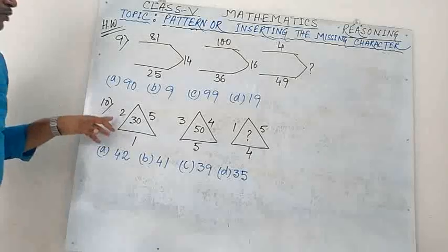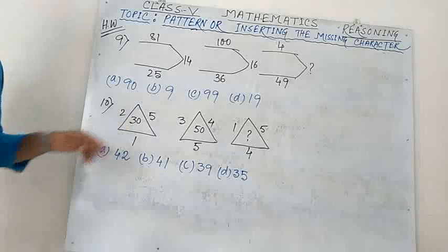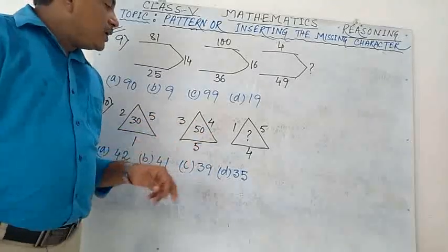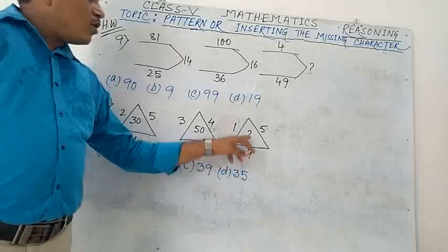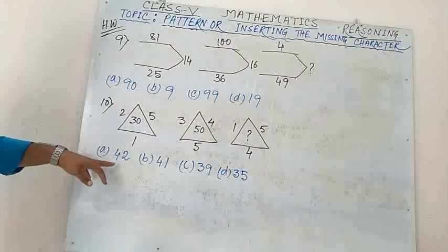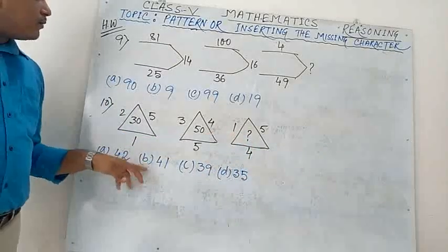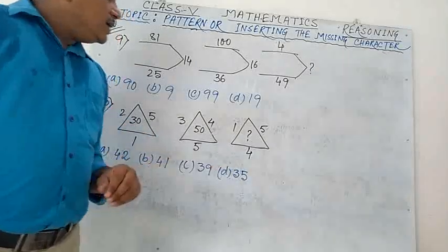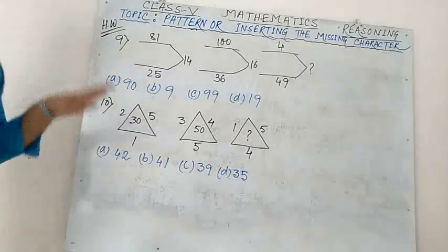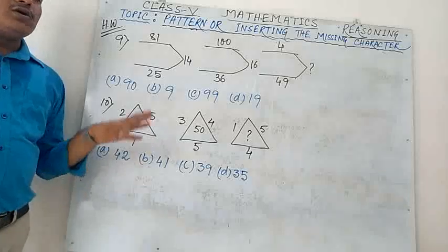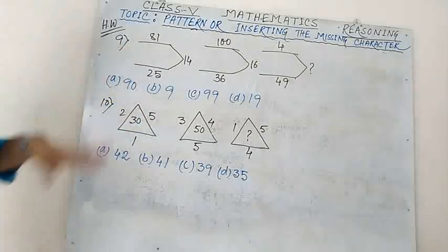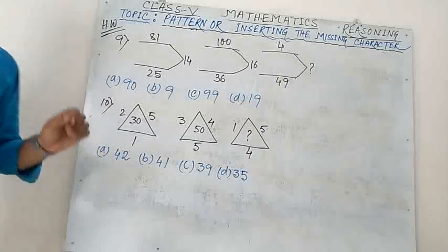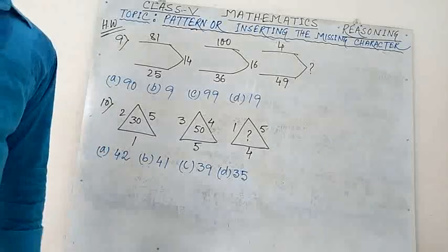Number 10: 2, 5, 1 → 30; 3, 4, 5 → 50; 1, 5, 4 → question mark. Options: A) 42, B) 41, C) 39, D) 35. So these are 10 homework problems based on today's discussion — you must do the homework in your classwork copy. Thank you.